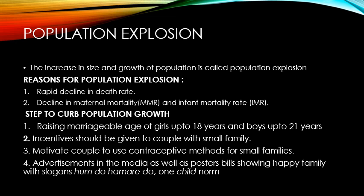Steps being taken to control population growth: Number one, raising the marriageable age of girls to 18 years and boys to 21 years — there should be no child marriage. Number two, incentives should be given to couples with small families, in the form of scholarships or other strategies. Number three, motivating couples to use contraceptive methods to control birth rate, with advertisements, posters, and billboards showing the happy family slogan 'Hum do, humare do' (we two, our two).